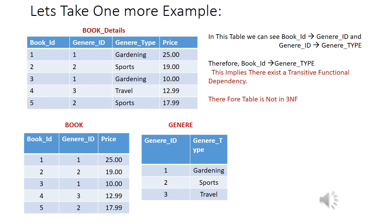We convert this table into 3NF by decomposing it. One table contains Book ID, Genre ID, and Price — Book ID is the primary key. The other table contains Genre ID and Genre Type — Genre ID is the primary key. Genre ID and Price both depend on Book ID, and Genre Type depends on Genre ID. There is no transitive functional dependency in these two tables, so both tables are now in 3NF.